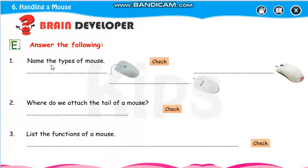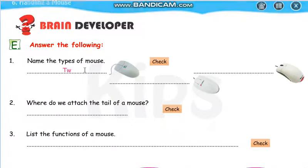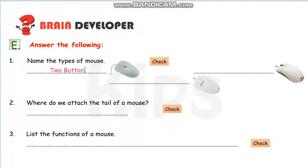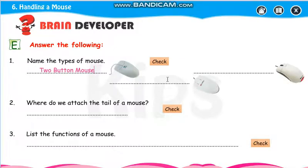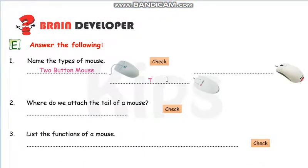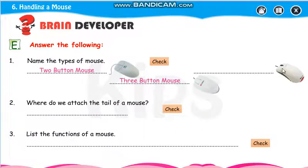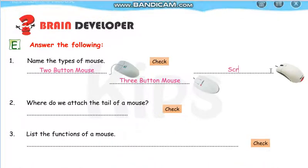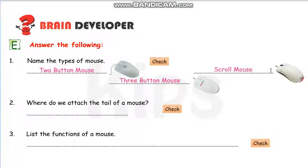Answer the following — name the type of mouse. Looking at the picture: how many buttons does the mouse have? Two buttons, so write 'two-button mouse.' Another one has three buttons — write 'three-button mouse.' And the one with a scroll wheel — write 'scroll mouse.'